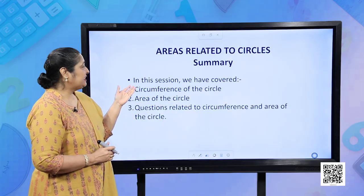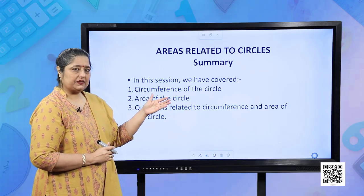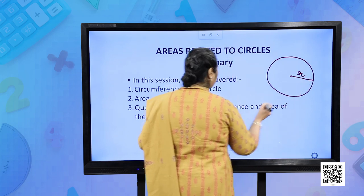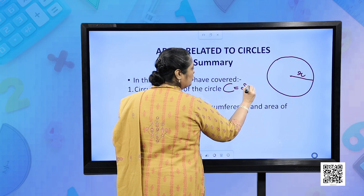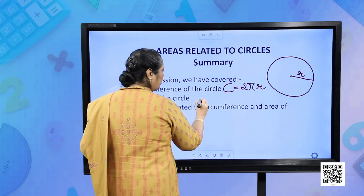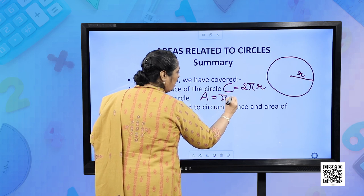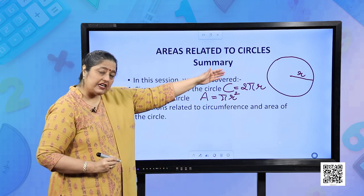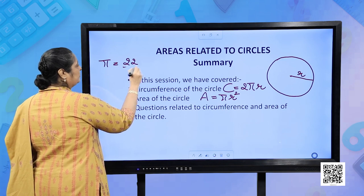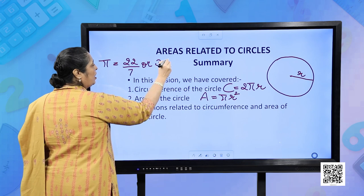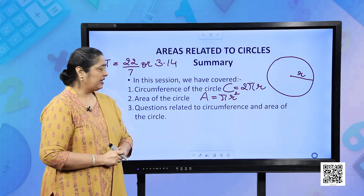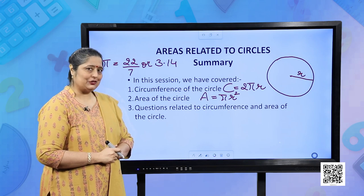Let us summarise this session. We have covered the circumference of the circle: C = 2πr, where r is the radius. We also solved questions related to circumference and area of the circle. The area of the circle is A = πr². The value of π can be taken as 22/7 or 3.14. I hope all the concepts are clear to you. Thank you.